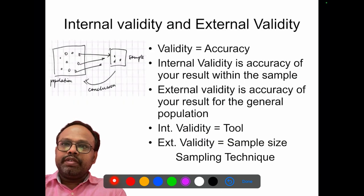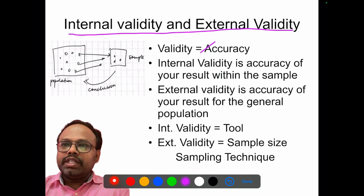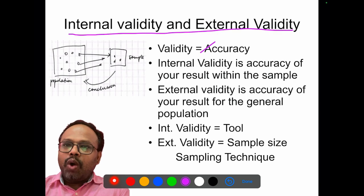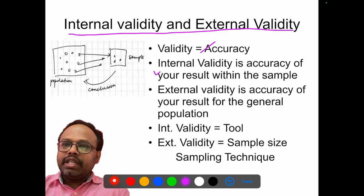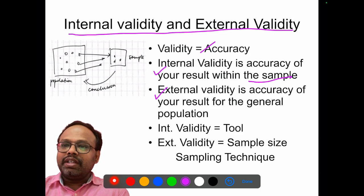Let me start with the difference between internal validity and external validity. Validity is otherwise called accuracy — the ability of the research to measure or estimate what it is supposed to measure. Internal validity is the accuracy within the sample. External validity is about how representative that sample is when we are generalizing.